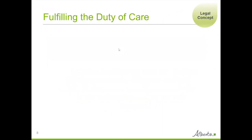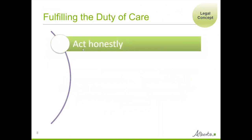There are four things you need to do to fulfill the duty of care. The first is to act honestly. Board members must deal honestly with the organization and should not act for any purpose other than the organization's purpose. Board members should also continuously think honestly about their ability to act with the organization's best interest in mind. For example, if a board member could no longer commit enough time to prepare for and attend board meetings, they must notify the board chair of this change. If no other solution can be found, they may have to resign from their position on the board. This whole process is about acting honestly.